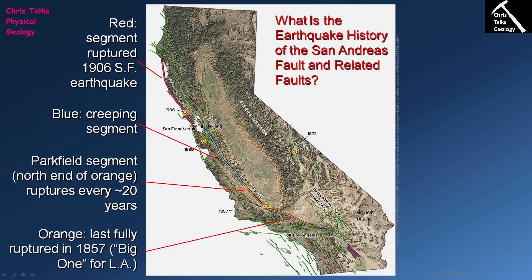Arguably the most dangerous portion of the San Andreas Fault is the southern portion of the Parkfield segment. The last time this area ruptured was in 1857, so there has been an extremely long period of time for substantial amounts of stress to build up on the fault plane. There is a very realistic possibility that when this portion moves it's going to move in a very big way and produce a very powerful earthquake — often referred to as 'the Big One' — which is especially relevant for Los Angeles, located relatively close to this portion of the fault.